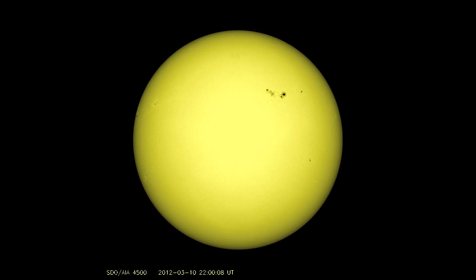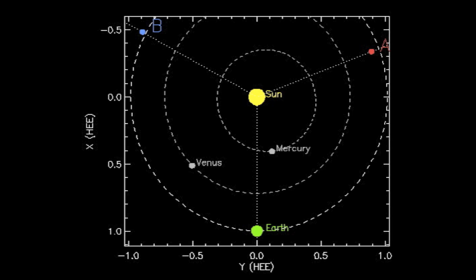On March 16th, the Active Region finally rotated off the Earth-facing solar disk. When features on the Sun move behind the Earth-facing solar disk, we can still view them with the imagers on NASA's Solar-Terrestrial Relations Observatory, or STEREO. There are two STEREO spacecraft in Earth's orbit — one drifting ahead of the Earth and one drifting behind. They are called STEREO A for ahead and B for behind.